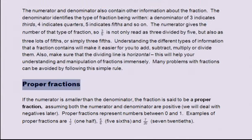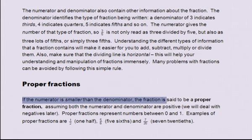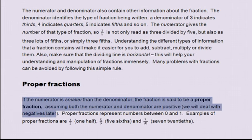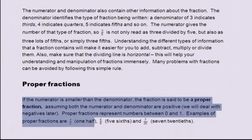Proper fractions. If the numerator is smaller than the denominator, the fraction is said to be a proper fraction. Assuming that both the numerator and denominator are positive — we will deal with negatives later — proper fractions represent numbers between zero and one. Examples of proper fractions are one-half, five-sixths, and seven-twentieths.